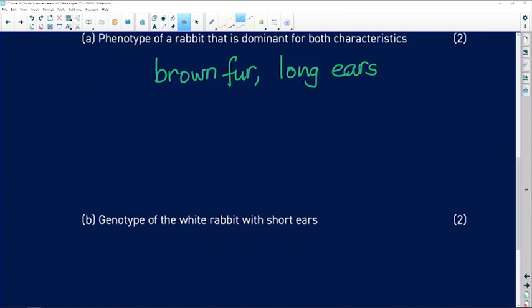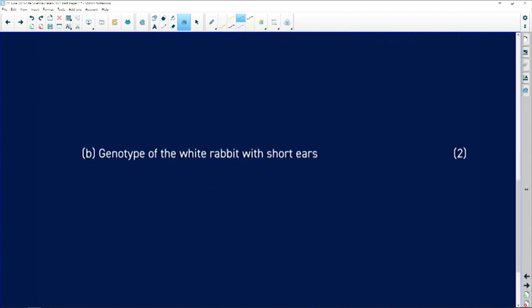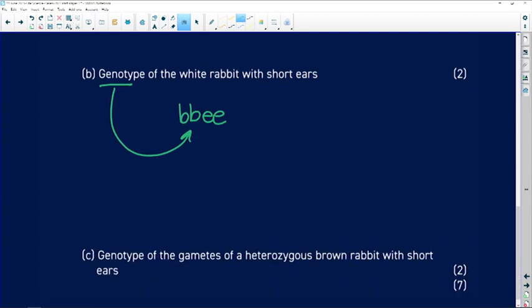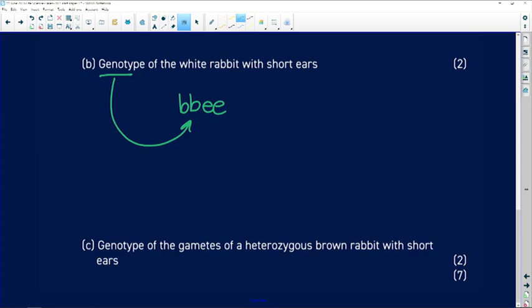Give the genotype of a white rabbit with short ears. Remember, the genotype - we write the letters representing the alleles. Give the genotype of the gametes of a heterozygous brown rabbit with short ears.